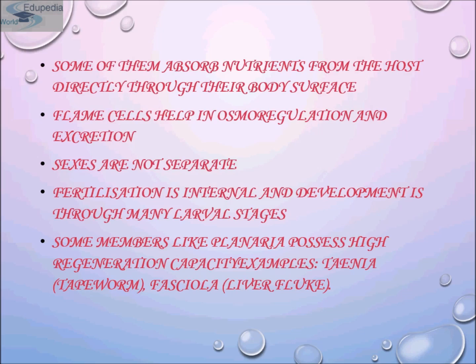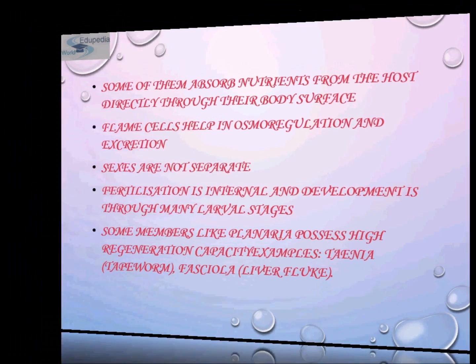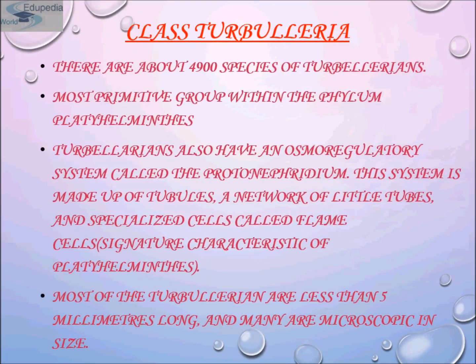The first class is Turbularia. They are primarily carnivores. There are about 4,900 species of turbularians, characterized by a soft epidermis that is ciliated, at least on the ventral surface. This is the most primitive group within phylum Platyhelminthes.